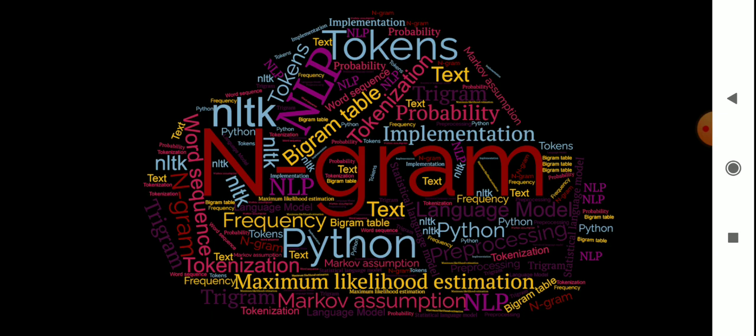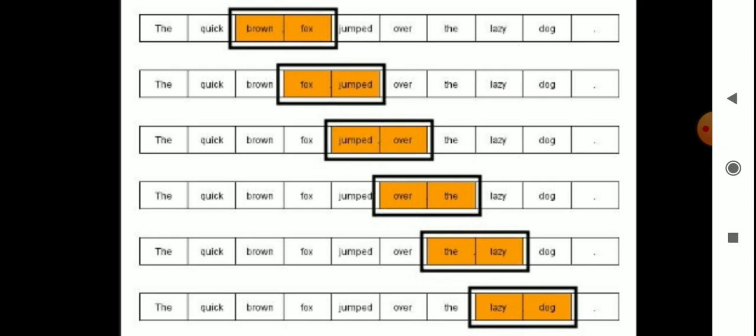N-gram can be defined as the contiguous sequence of n atoms from a given sample of text or speech. The atoms can be letters, words, or base pairs according to the application. N-grams are typically collected from a text or speech corpus, where corpus means a long text dataset.